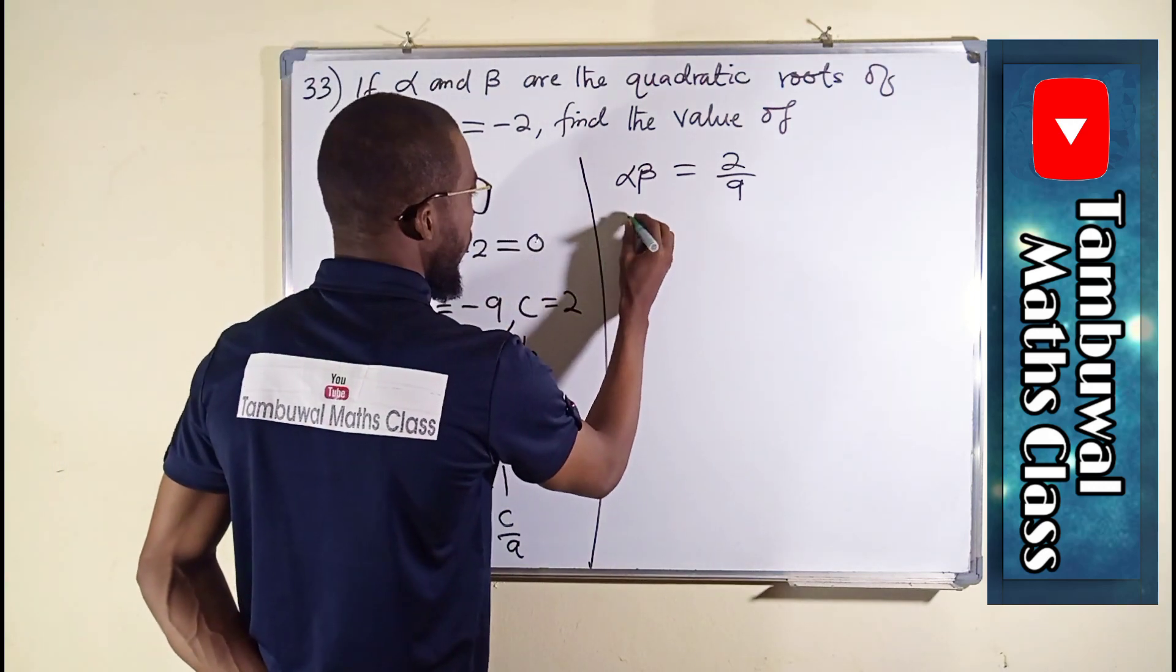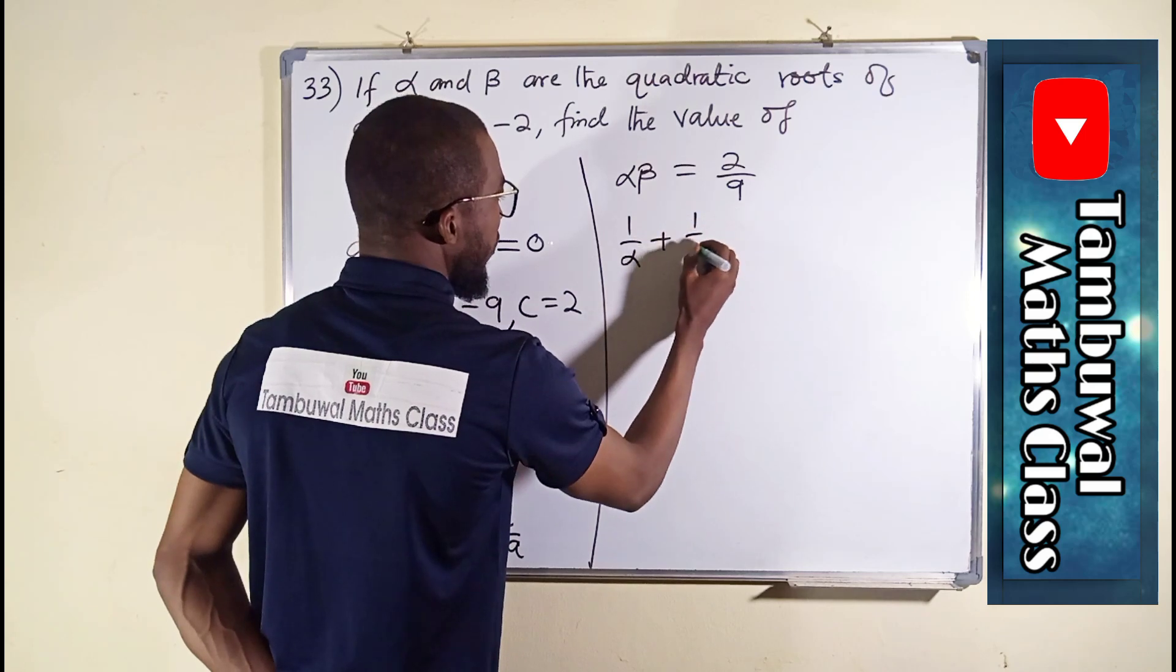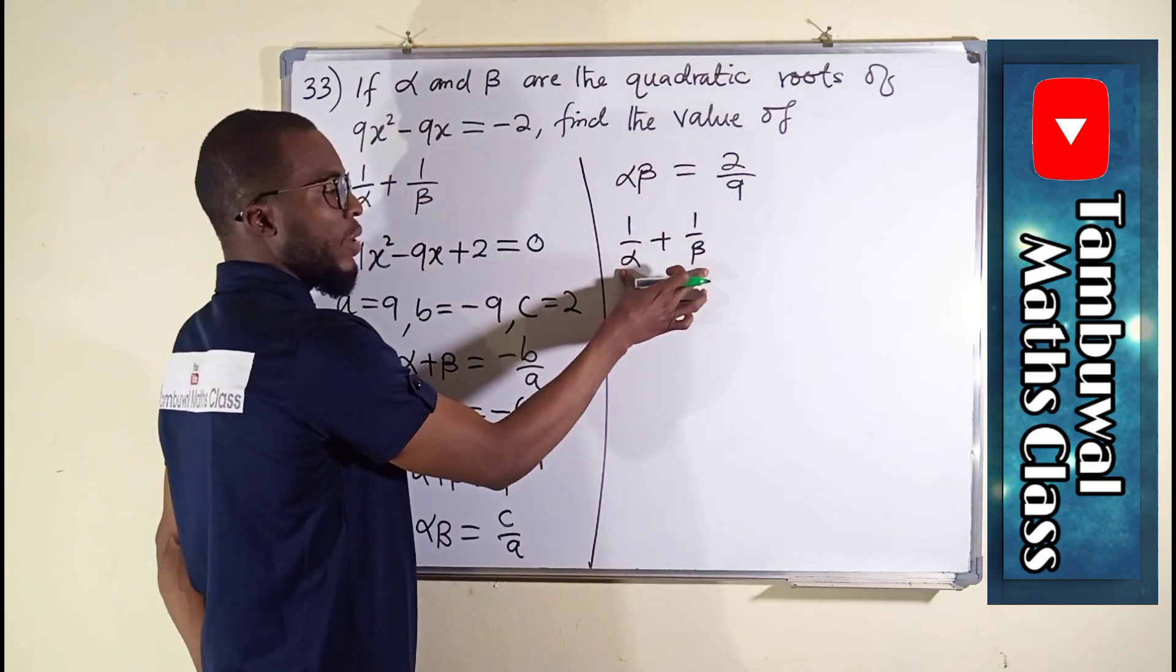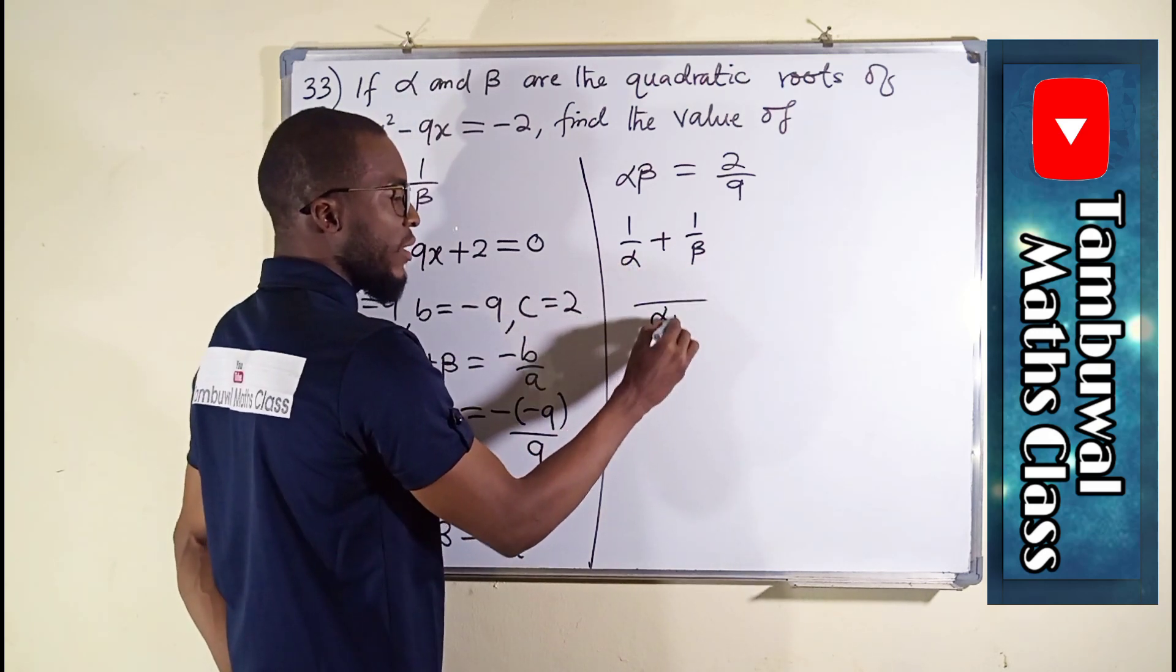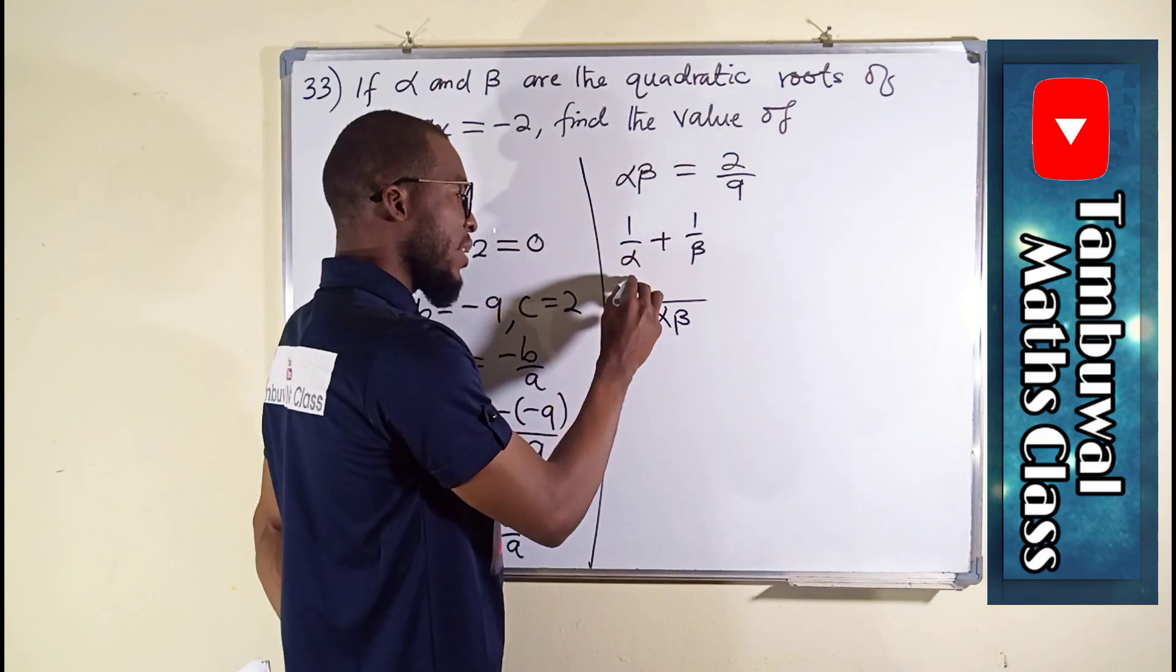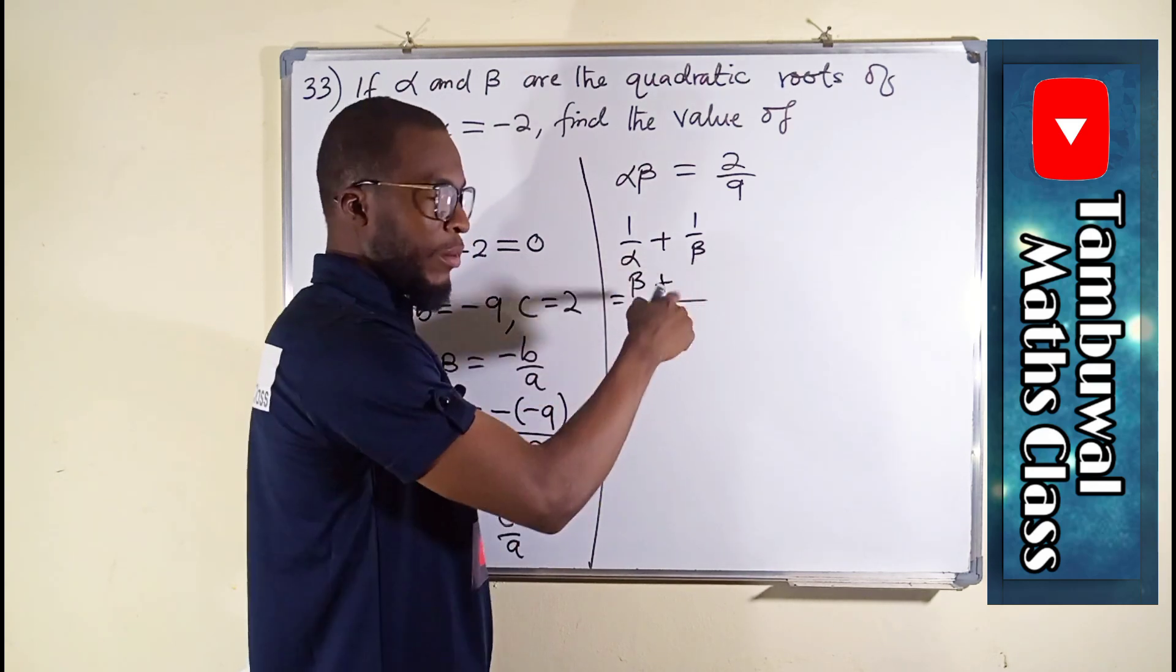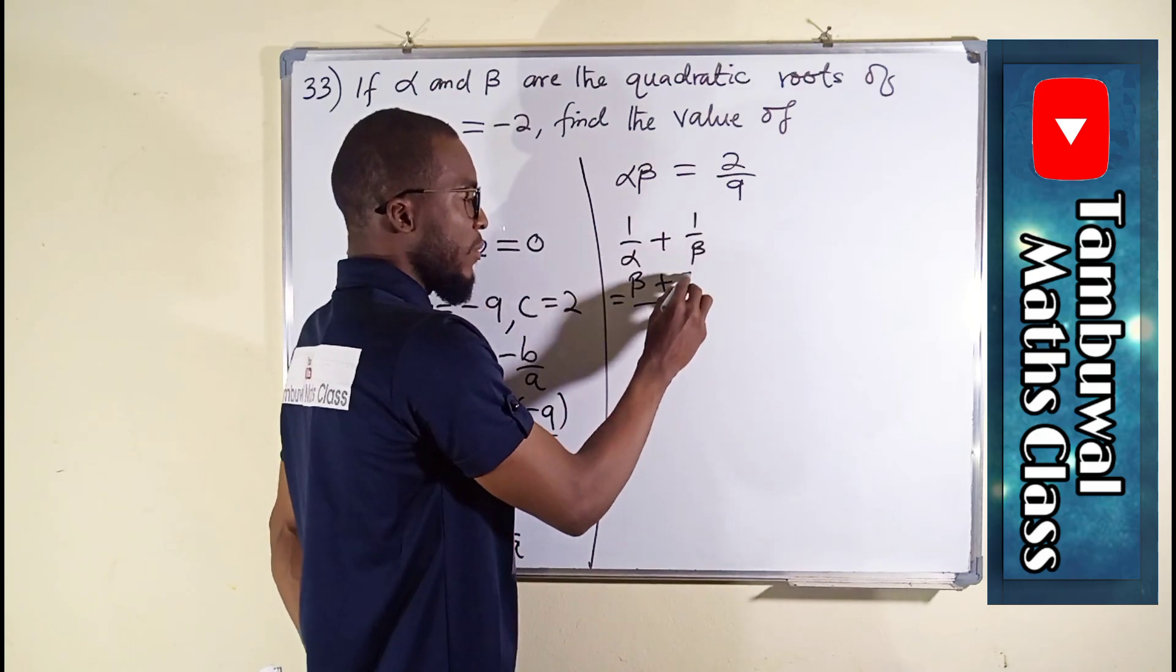So having obtained this, let us simplify because this is what we are looking for: 1 over alpha plus 1 over beta. The LCM between them, if you take the LCM of alpha and beta, you should obtain alpha beta. When you take alpha and plug it here, you're going to obtain beta, and beta times 1 is beta. Plus, when you take beta, plug it here, you're going to obtain alpha, and that alpha times 1 is alpha.